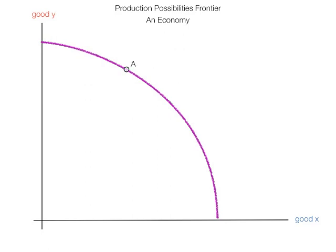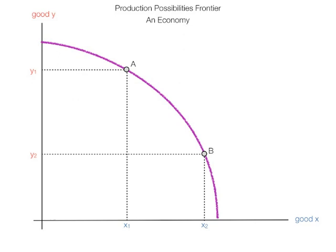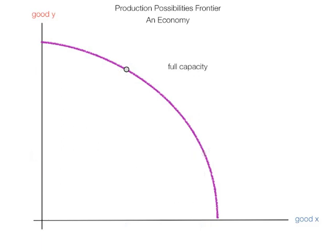If this economy produces at level A, X1 is produced and Y1 is produced. If at point B, Y2 is produced and X2 is produced. At points A and B, the economy is at full capacity. In fact, anywhere along the purple curve, the economy is at full capacity.